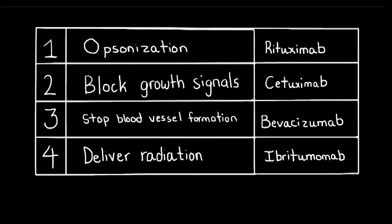Monoclonal antibodies are also used in cancer treatments. They help combat cancerous growth through many functions that include opsonization, initiating apoptosis, blocking growth signals, preventing angiogenesis or development of new blood vessels, and delivering radiation to specific locations. Let's take a look at an example of each of these functions.